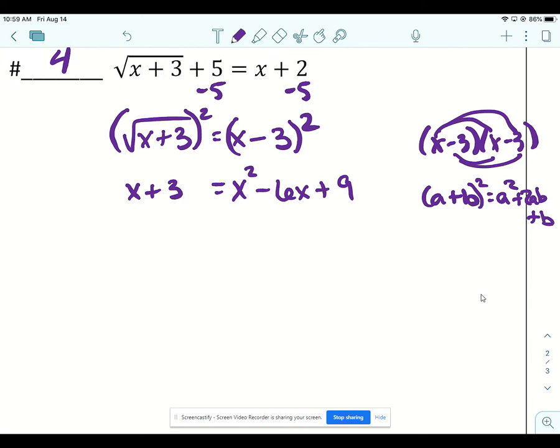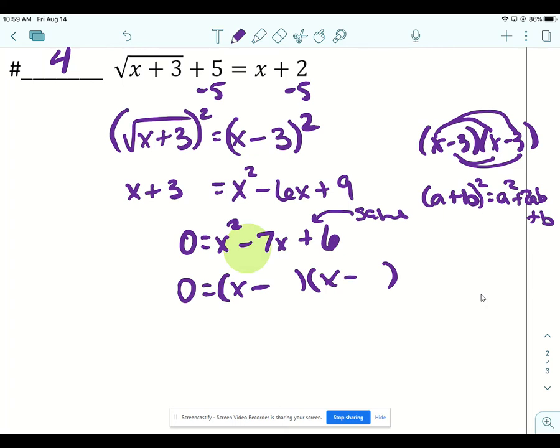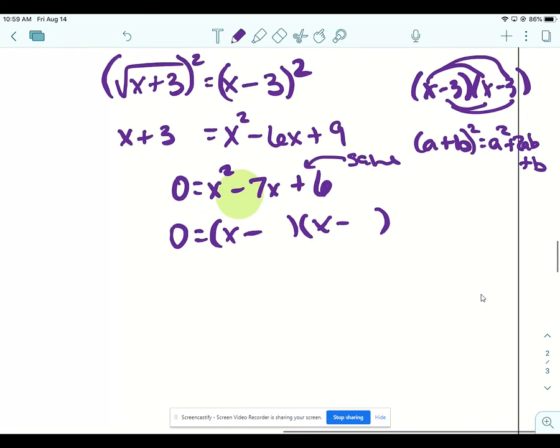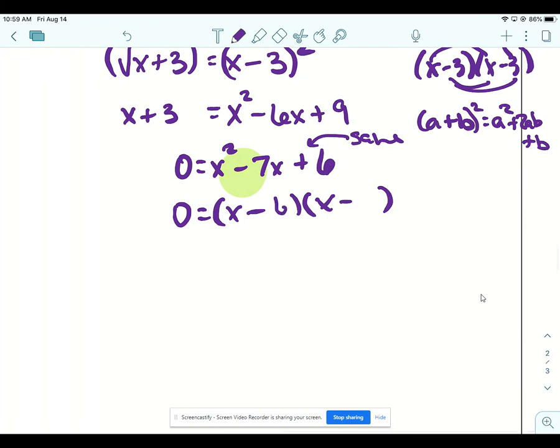Okay, then I'm going to get everything on one side by subtracting x and subtracting 3. All right, and then we're ready to factor it. So this tells you your signs are the same and this tells you what they are. All right, and then to multiply to get 6 and add to get 7, that's going to be 6 and 1.